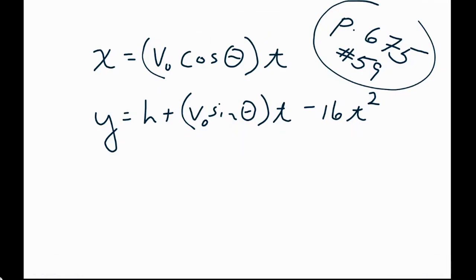All right, so before we take a look specifically at page 675 number 59, just a word on these projectile motion parametric equations. Do we understand that these are giving the horizontal and vertical components based on time? If an object is projected, it's always going to follow the same type of path that's something you can study a bit in physics.